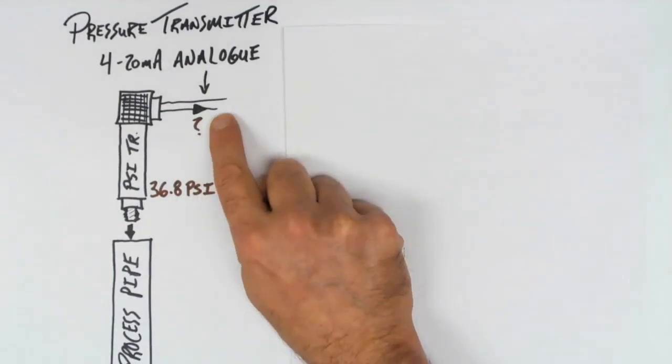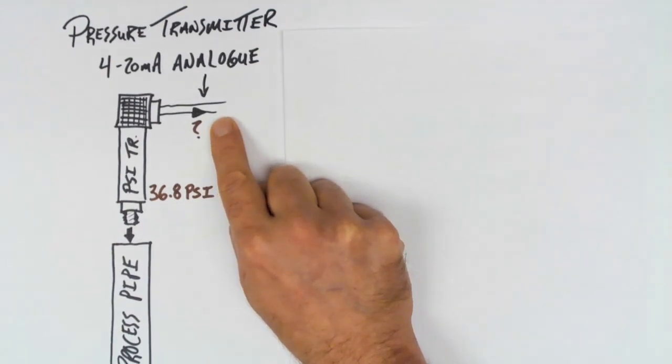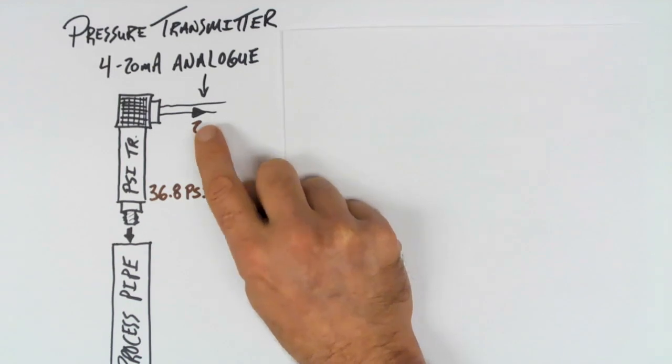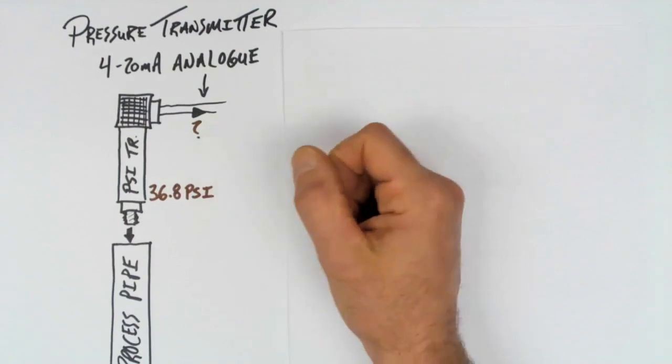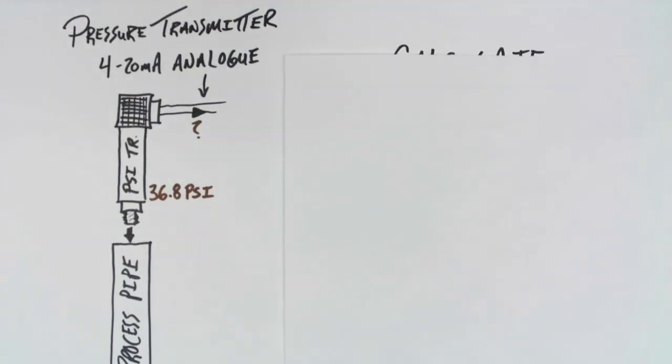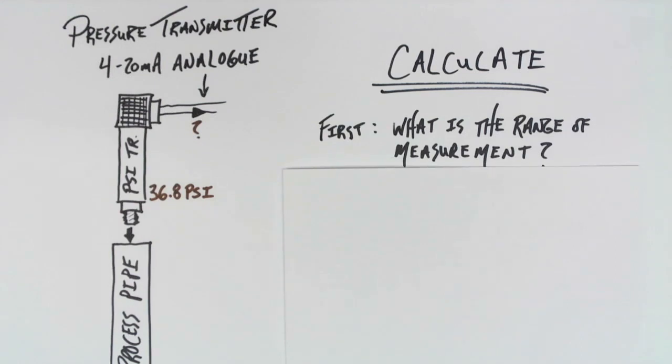We're taking a measurement on this conductor, and we want to verify is the pressure transmitter actually operating correctly. The only way we can do that is if we have some ideas to what it should be. A few steps that we need to follow. The first thing we need to know is this: What is the range of the measurement that we're planning on actually measuring with this pressure transmitter?